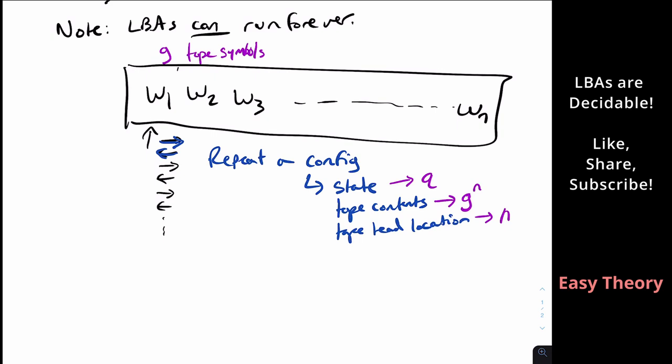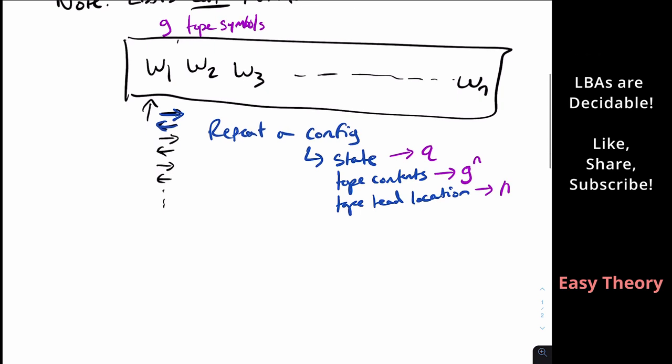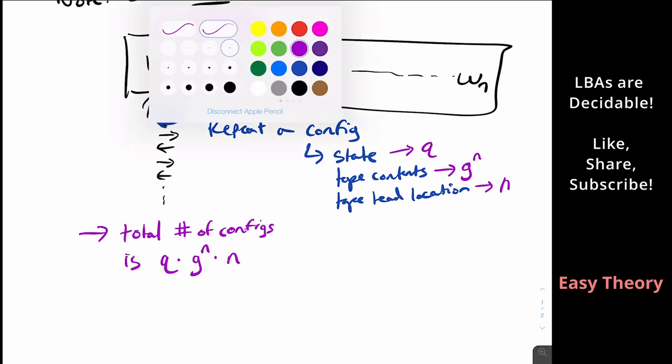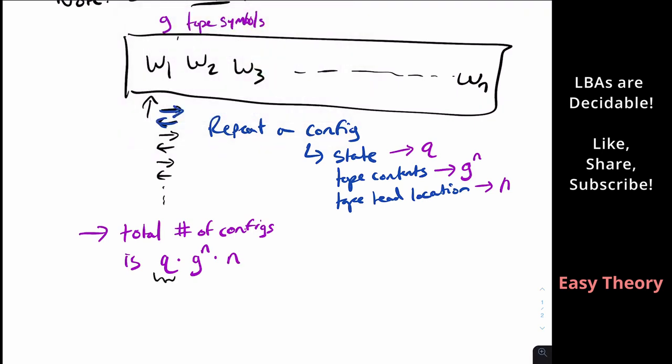But for each of the tape contents, we could be in any state and in any of the tape head locations. So the total number of configs that we could ever have in an LBA on an input of length n is q, the number of states, times G^n times n. So let's just remind ourselves that this is the state, this is the location of the tape head, and these are the tape contents.